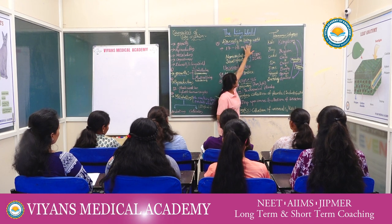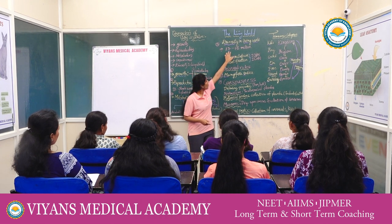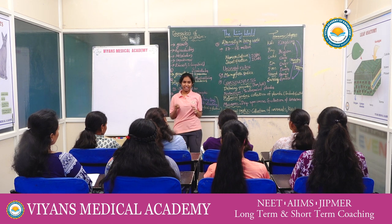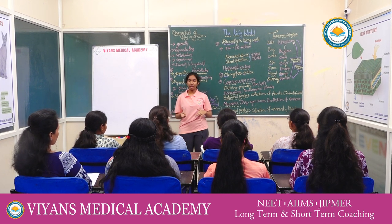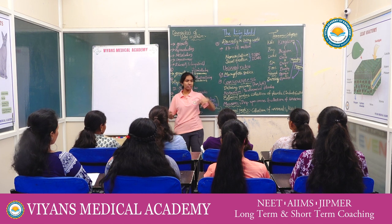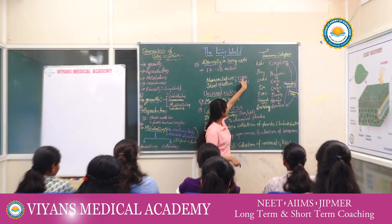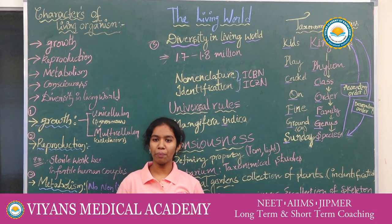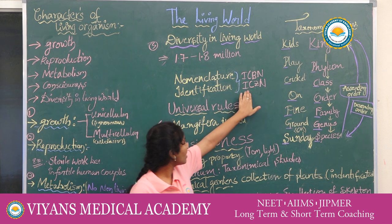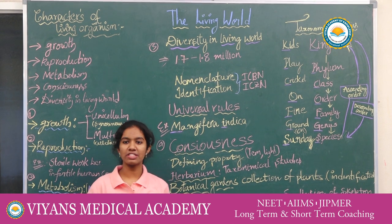Next, we move to diversity in the world. We have a lot of diversity — that is 1.7 to 1.8 million species. The naming of living organisms is called nomenclature. Naming is only possible when an organism is described and we correctly know what name is attached to it — this is called identification. It is carried out by two forms: ICBN and ICZN. ICBN is the International Code for Botanical Nomenclature, and ICZN is the International Code for Zoological Nomenclature. These also have some universal rules.